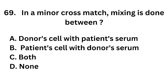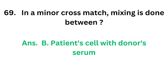Question number 69. In a minor cross match, mixing is done between: Option A, donor cell with patient serum; Option B, patient cell with donor serum; Option C, both; Option D, none. The correct answer is Option B, patient cell with donor serum.